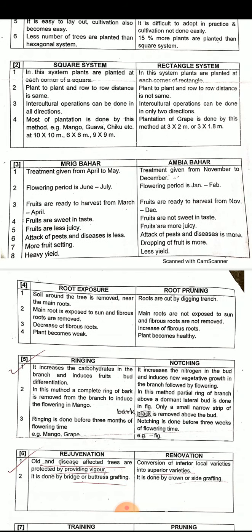In Mrig Bahar, fruits are ready to harvest from March to April. In Ambiya Bahar, fruits are ready to harvest from November to December.